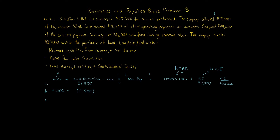Transaction C: Korn incurred $36,700 of other operating expenses on account. No assets are affected because we're not paying cash — no cash, no accounts receivable, no land. Accounts payable goes up by $36,700 because any time you see 'on account' for an expense outflow, it's accounts payable. Expenses reduce retained earnings, so retained earnings goes down by $36,700. The accounting equation balances.